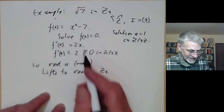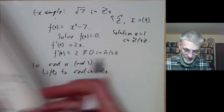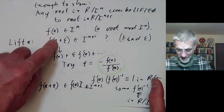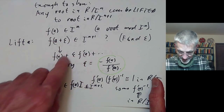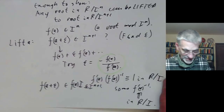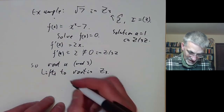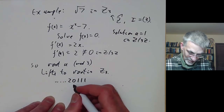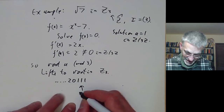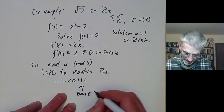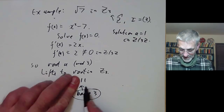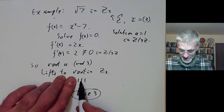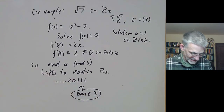It's quite easy to work out: the proof finds the digits of the root one at a time. Each time we have n digits, we do this construction and find n plus 1 digits. If you carry this out, the first few digits (in base 3) are 2, 0, 1, 1, 1. So the root is 4 modulo 3 squared, then 9 plus 3 plus 1 = 13 modulo 3 cubed, and so on.